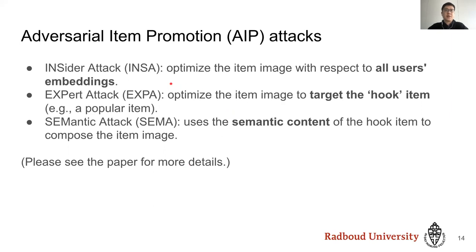Let's move to the details of AIP. We first assume attackers who have access to all trained embeddings — these could only be insiders with full knowledge of the system. We call our high-knowledge attack the insider attack, or INSA. INSA optimizes the target item image with respect to all user embeddings to achieve a high relevance score. For attackers who only have access to pre-trained visual feature extraction models, we call this the medium-knowledge expert attack, or EXPA, because it requires transfer learning knowledge. EXPA promotes by manipulating the visual features of the target item image to resemble a popular item image.